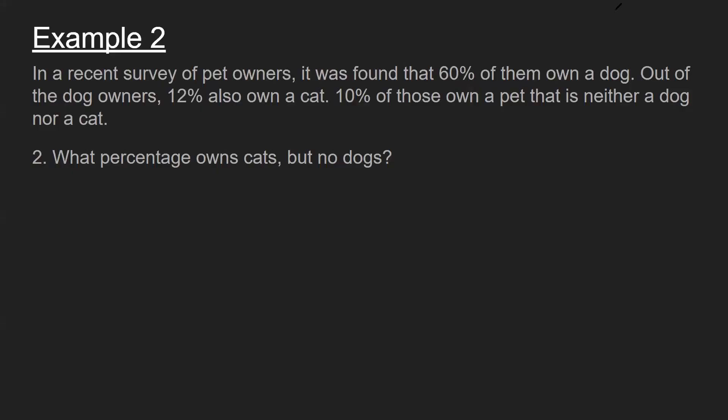All right. On to part two. Same information here. Now the question asks what percentage owns cats but no dogs? So there are two conditions that need to be satisfied. So it's going to be an intersection problem again. However, since we don't want to include dog owners, we want cat owners, then we'll have this complement here.